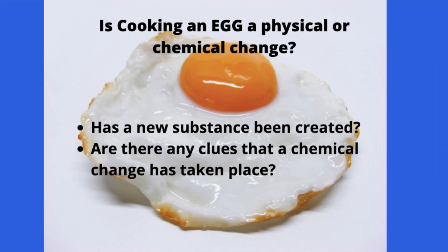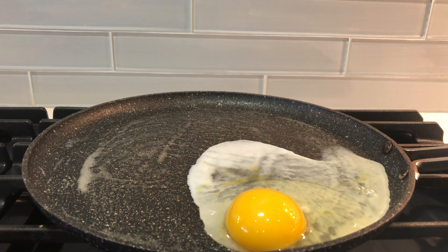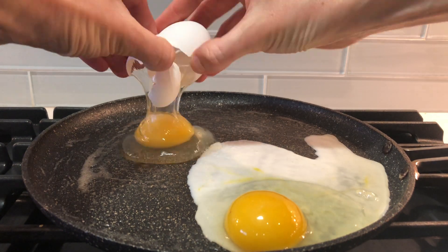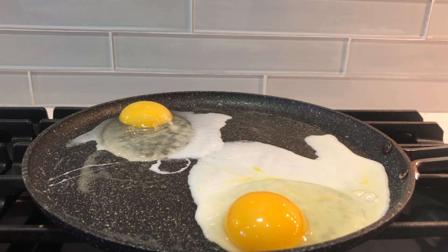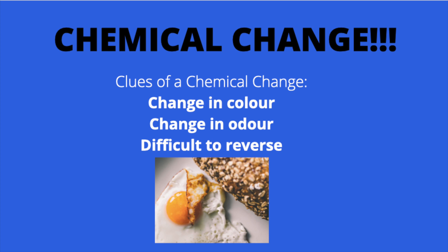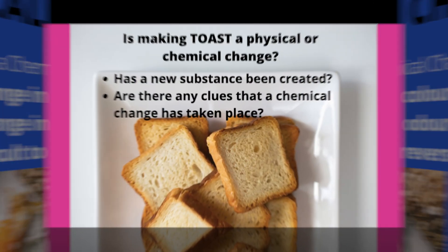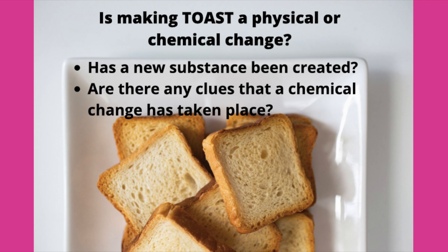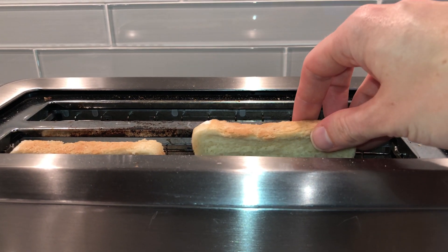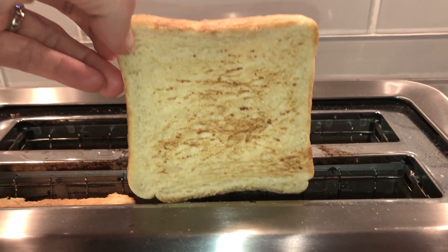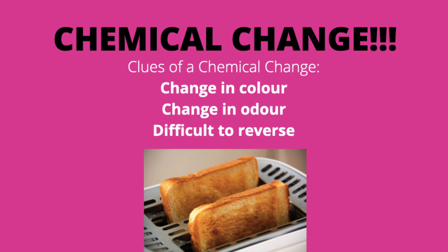Now let's get cooking. Is cooking an egg a physical or a chemical change? Has a new substance been created? Are there any clues that a chemical change has taken place? It's a chemical change. There's been a change in colour — the egg white has gone from a clear colour to a solid white. There's a change in odour, and it's difficult to reverse. Is making toast a physical or a chemical change? It's a chemical change — again, there's been a change in colour, a change in odour, and it's difficult to reverse.